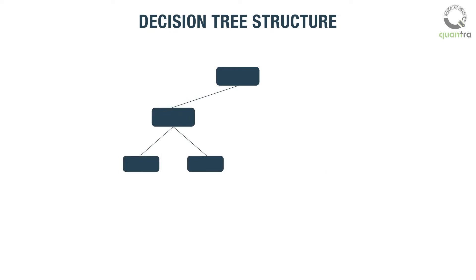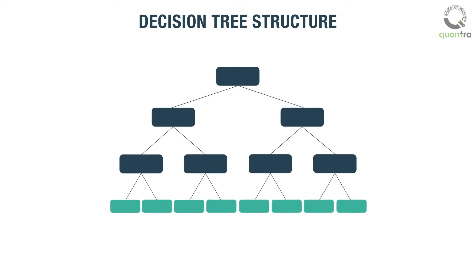Decision trees are so called because they use a tree-like model to visually and clearly represent decisions and decision making.